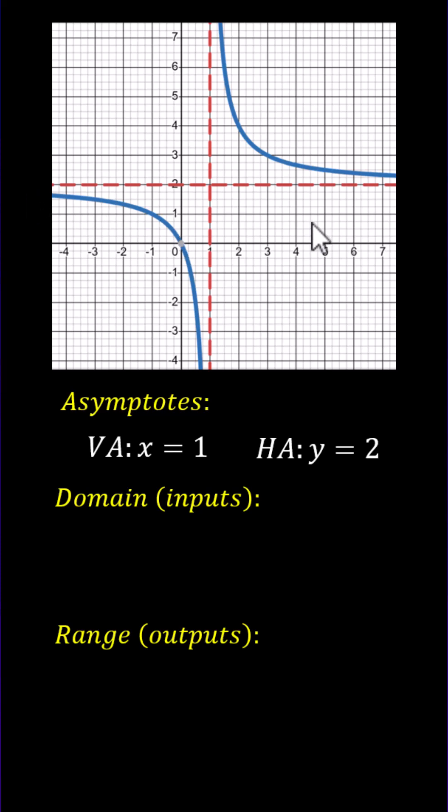The domain is all real numbers except x equals 1, which we express as x less than 1 or x greater than 1. We're using interval notation. We have the open interval from negative infinity to 1, union the open interval from 1 to infinity.